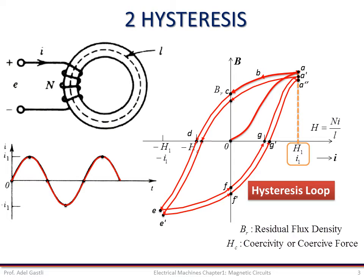The loop shows that the relationship between B and H is nonlinear and multivalued. Throughout the whole cycle of magnetization, the flux density lags behind the magnetic intensity. This lagging phenomenon in the magnetic core is called hysteresis, which is a Greek name meaning deficiency or state of being behind or late.